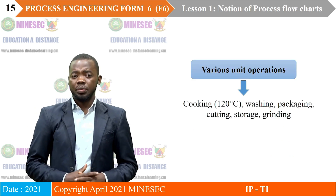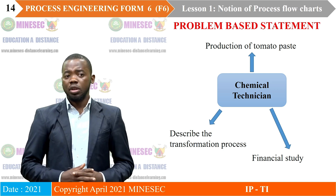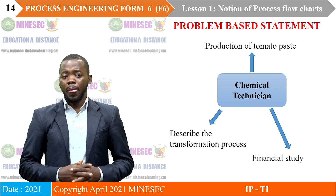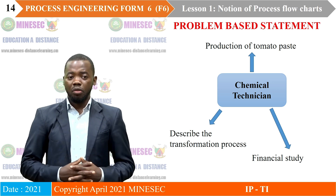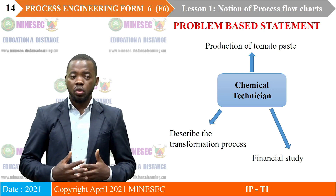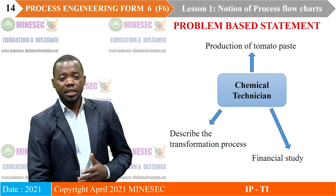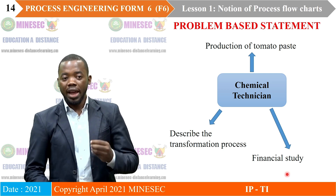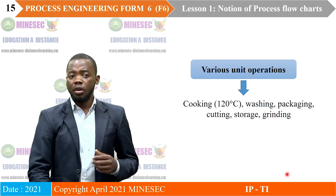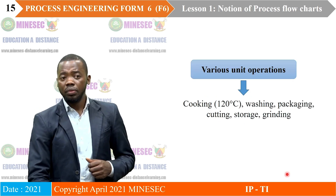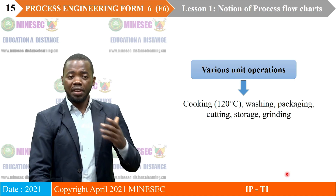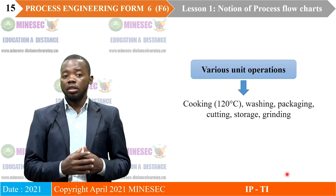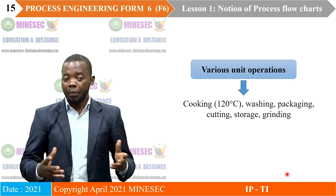A chemical technician wishes to establish a tomato paste production factory. To do so, he needs to describe all the transformation processes by means of a schematic representation, and also to perform a financial study to determine the budget needed. From everyday experience, tomato paste production involves several operations like cooking, washing, packaging, cutting, storage, and grinding — though these operations are not yet in order.